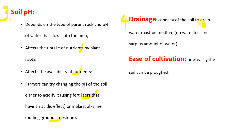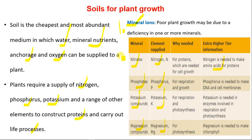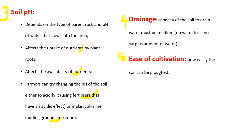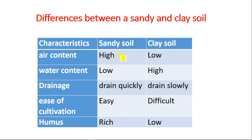Drainage: the capacity of the soil to drain water must be medium — so there is no water loss and no surplus amount of water — to suit plant growth. Ease of cultivation refers to how easily the soil can be plowed or cultivated. So when looking at soil as a medium for plant growth, you consider mineral ions, organic content, soil pH, drainage and ease of cultivation.